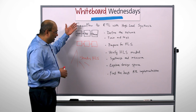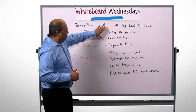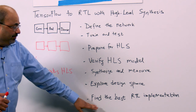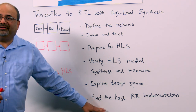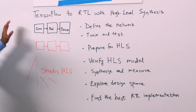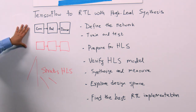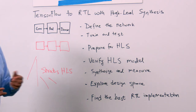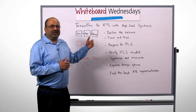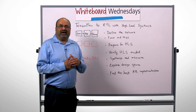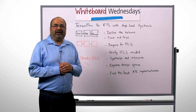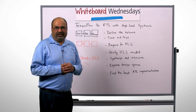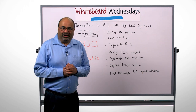So in short, you can go from a network defined in TensorFlow to finding the best RTL implementation for your requirements in a very, very short time using the high-level synthesis flow. You can find the example on the Cadence support website — just go to the Stratus HLS page and look for the rapid adoption kit called TensorFlow to RTL with HLS. Thank you for watching.